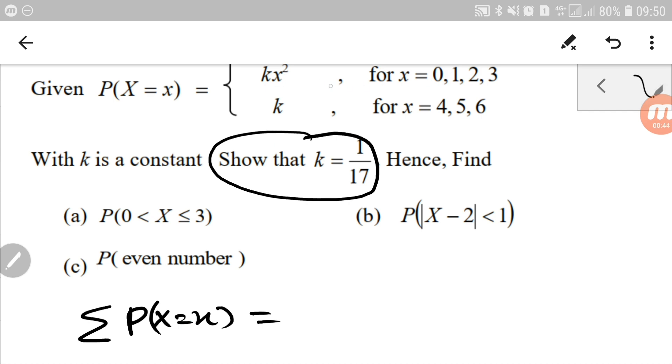It's kx square for x 0, 1, 2 and 3. So just substitute the value. k0 square plus k1 square. Please take note, the square is only for the number, not the constant.